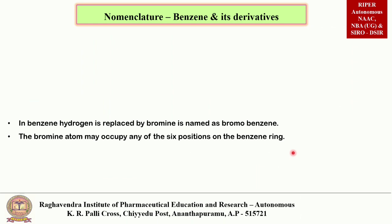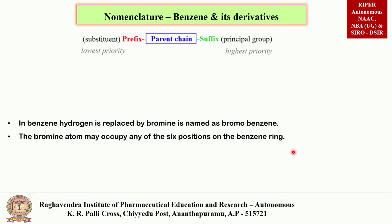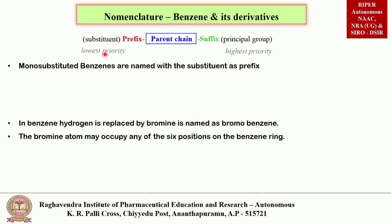Coming to the nomenclature part: whenever substitutions are present in the parent chain, we have to indicate them as a prefix or suffix. The suffix is the principal group — it has the highest priority — and the prefix is a substituent, which has the lowest priority.